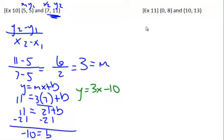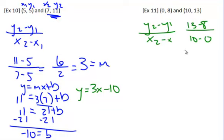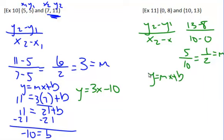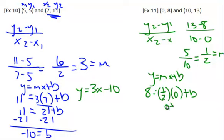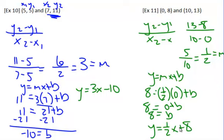Number 11 — same thing. Start with the slope: y2 minus y1 over x2 minus x1. It's 13 minus 8 over 10 minus 0. Thirteen minus 8 is 5, and 10 minus 0 is 10, giving five-tenths. Reduce it to one-half — that's your slope, your m. Put it into y equals mx plus b using the point (0, 8): 8 equals one-half times 0 plus b. One-half times 0 is 0, so b equals 8. The equation is y equals one-half x plus 8.